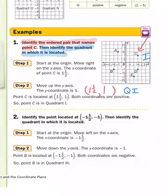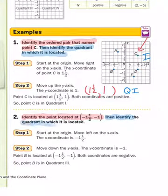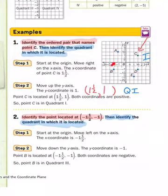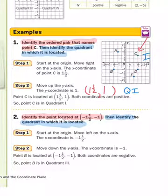Now example 2 is similar, but we have one different thing to do. It says identify the point located at negative 1.5, negative 1, and then identify the quadrant in which it is located. So let's start at the origin here, and go over to the negative 1.5, which means over to the left. Then the second coordinate is negative 1, so I have to go down to negative 1, which is right here. So the first part of our answer is going to be point B.